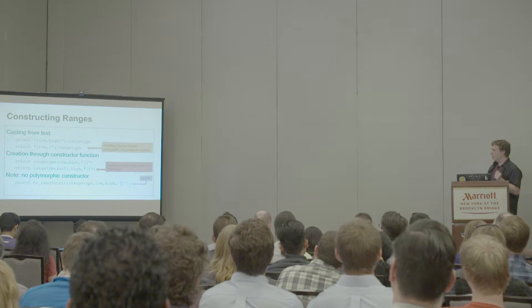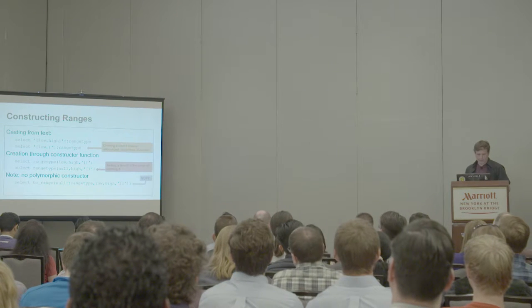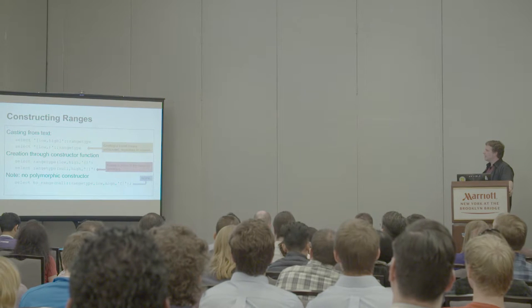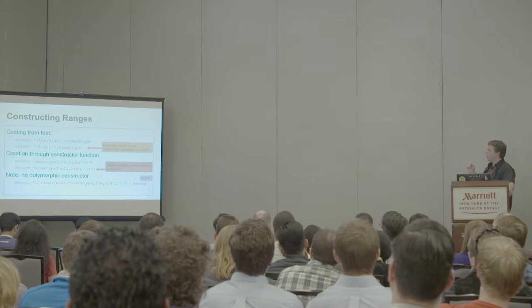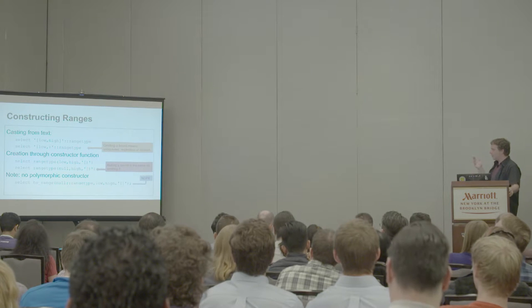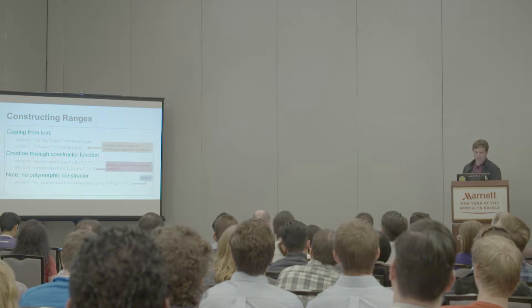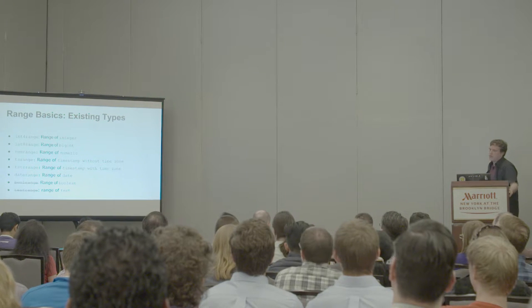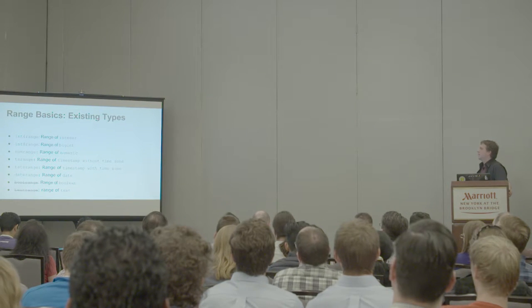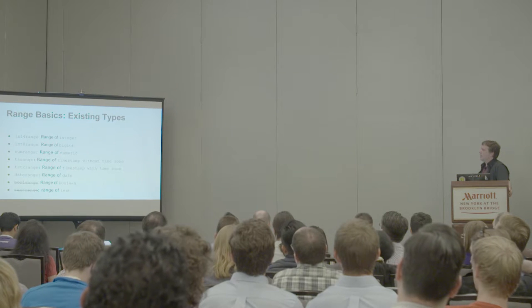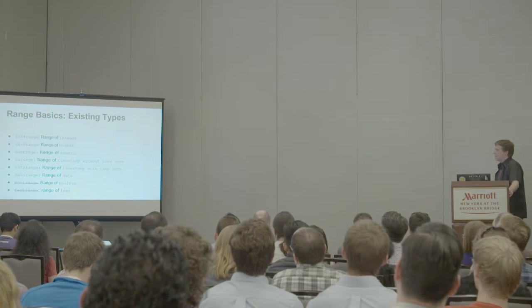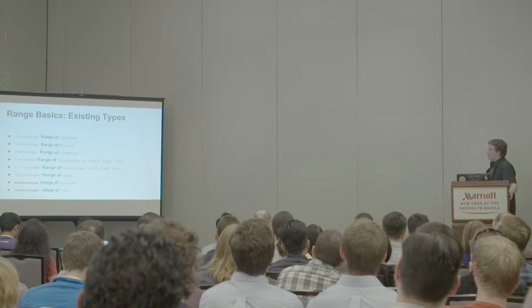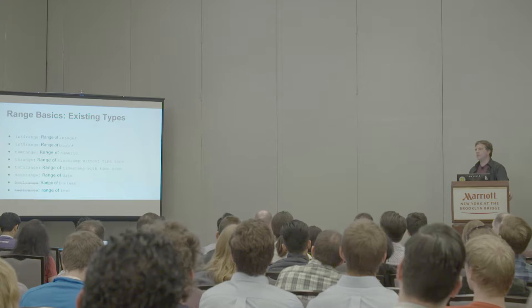There is no polymorphic way to do this — that was a small gripe of mine, so you can't select to a range of a type with arbitrary low and high bounds and an exclusivity constraint. What types exist? You've got your basic integers, numerics, timestamps, dates. They left off Boolean, I guess because the range isn't that big.